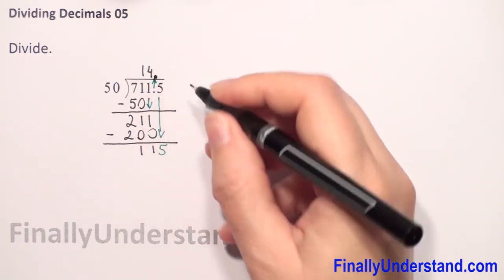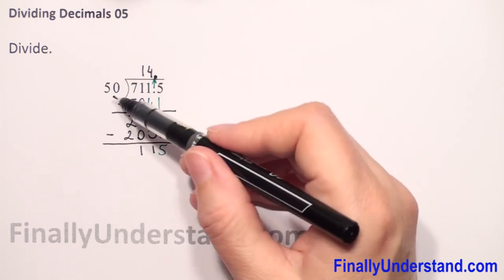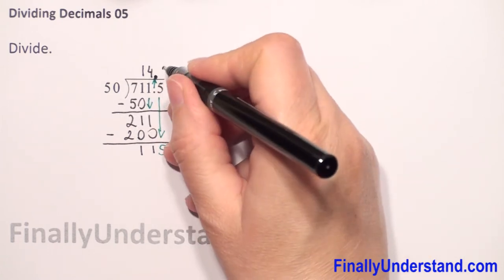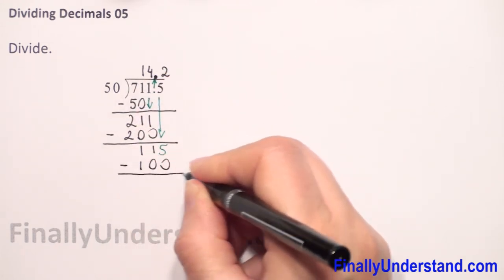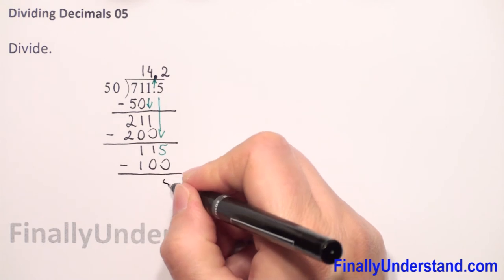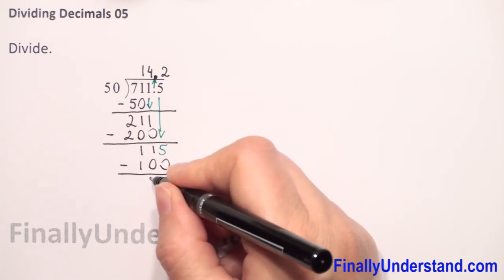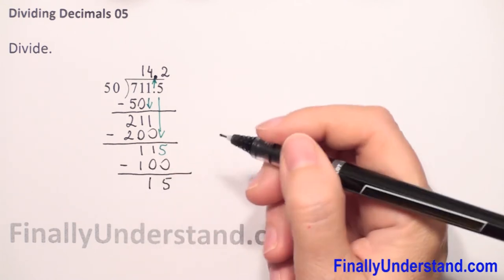And again, 115 divided by 50 is 2. 2 times 50 is 100. And again, subtraction: 5 minus 0 is 5, 1 minus 0 is 1, 1 minus 1 is 0. You don't have to write that.